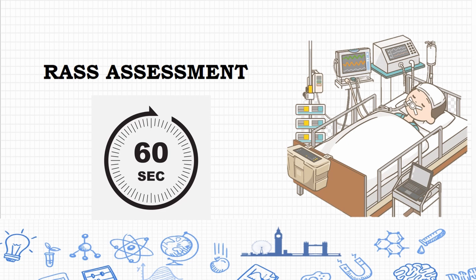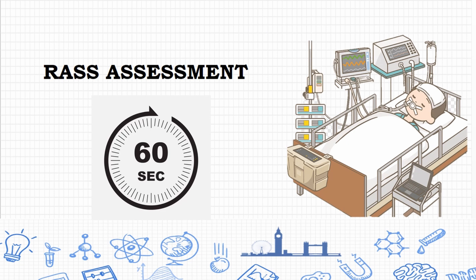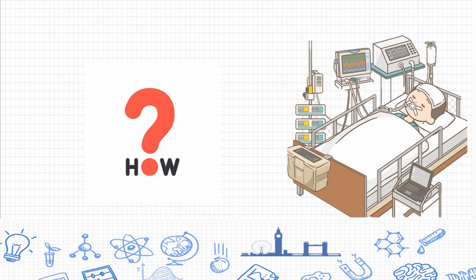The RASS assessment takes about only 30 to 60 seconds — less than a minute. The scoring is based on observation and response to auditory and physical stimulation.